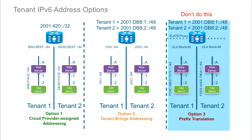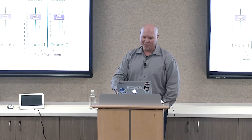The last point on this slide: don't be the person that does ULA — unique local addressing — inside your cloud and then uses some sort of translation and proxy box in and out of that. This is continuing the broken IPv4 mentality. There literally is no technical justification for you to go down this path. Please don't do this. If you've got a justification for it, I would be happy to talk about it.